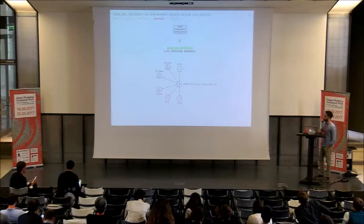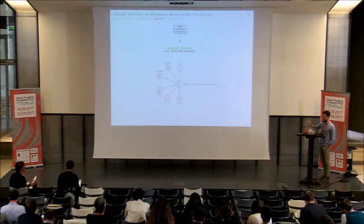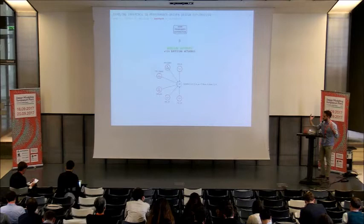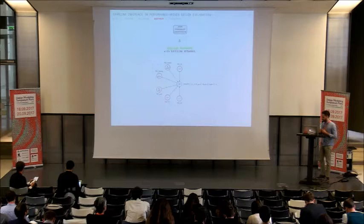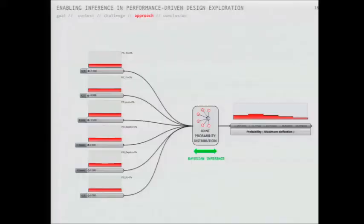Very briefly, a Bayesian network is a type of statistical model - a probabilistic graphical model - where the nodes represent variable distributions and the edges represent causal relationships. It computes the joint probability distribution over everything, so once you have this network you can perform inference and explore from one node to another. In design analysis systems, the inference only happens between inputs to outputs and outputs back to inputs.